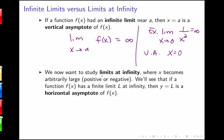We now want to study a different problem: instead of approaching a number and having the function grow larger, we're going to let x approach infinity and see what happens to our function. The idea with limits at infinity is that x is becoming larger and larger, and we want to know what f(x) is getting closer to. If the limit as x approaches infinity of our function equals some number L, then the horizontal line y = L will be a horizontal asymptote.